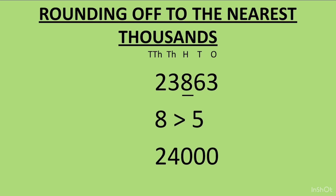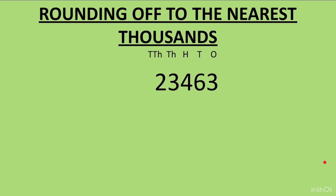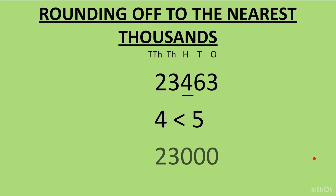Now, if instead of 8 we had a smaller number, say 4, at the hundreds place — the number would be 23463. Rounding to the nearest thousand, we look at the hundreds place: 4. Since 4 is less than 5, we do not change the digit at thousands place. Only the digits at hundreds, tens, and ones place — 4, 6, and 3 — are changed to 0. So 23463 rounds off to 23000.